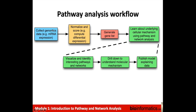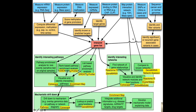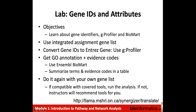Coming back to the pathway analysis workflow: we've been talking about the identifiers used at these steps where we collect genomics data. The results will use some kind of gene identifier to label genes, and we'll probably keep those during normalization and scoring and to create a gene list. But then we might clean our gene list to make sure all gene identifiers are correct in preparation for analyzing them with a more detailed workflow. This lab is available if you want to practice working with gene identifiers and attributes, learning about G-Profiler and Biomart, using the integrated assignment gene list or your own gene list to play with the G-Convert system and Ensemble Biomart.